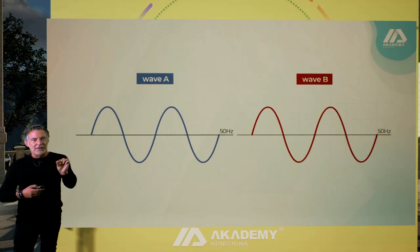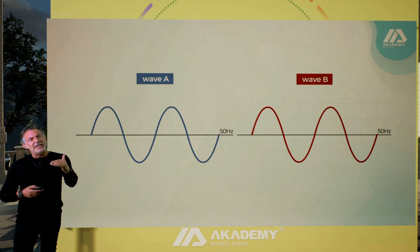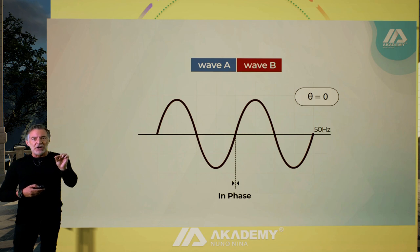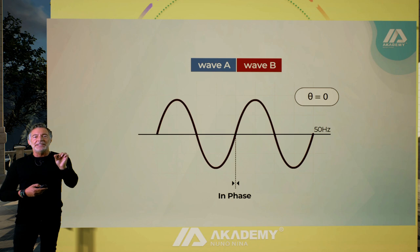Let's imagine we have two waves, wave A and wave B, with the same amplitude, frequencies, and wavelength. Okay, so if I move wave B and place it on top of wave A with one overlapping the other,